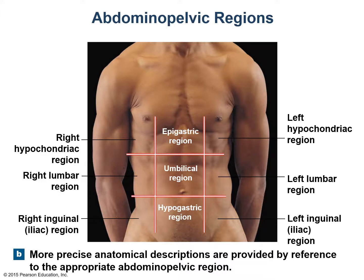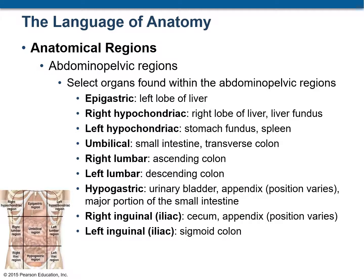The abdominopelvic regions provide more precise anatomical descriptions. This slide provides a list of some select organs found within these nine abdominopelvic regions. Creation of these regions makes it easier for healthcare professionals to make a diagnosis. For example, if a patient comes complaining of pain in the right lumbar region, it could be attributed to the ascending colon. Or if the patient has discomfort in the left inguinal region, it could be attributed to the sigmoid colon.